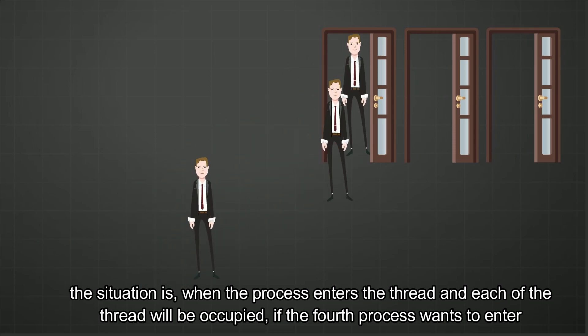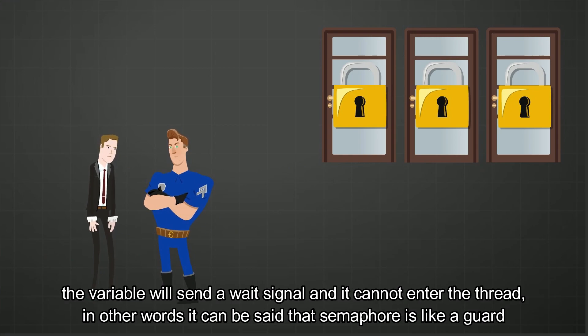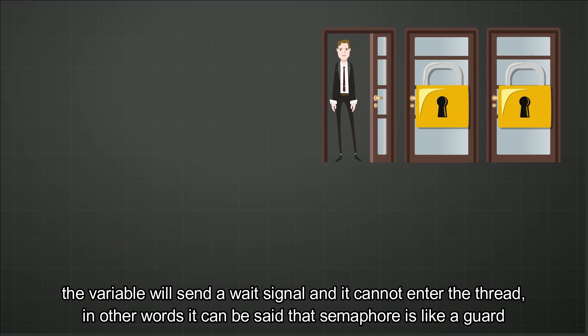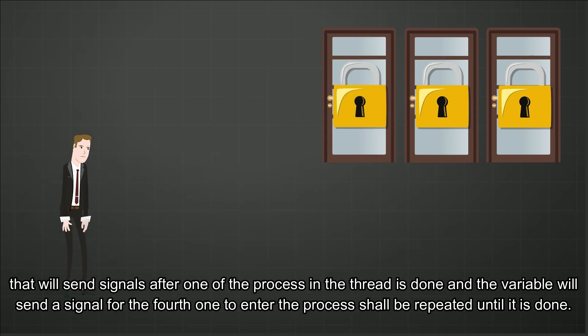The solution is when the process enters the thread and each of the threads will be occupied. If the fourth process wants to enter, the variable will send a wait signal and cannot enter the thread. Semaphore is like a guard that will send signals after one of the processes in the thread is done.